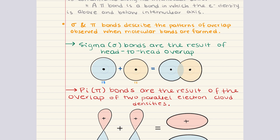There are two main patterns of overlap in the formation of molecular bonds. The first is sigma bonds. A sigma bond occurs when the electron density is concentrated along the internuclear axis — when orbitals overlap head to head. Sigma bonds allow for free rotation about their axis because the electron density is a single linear accumulation between the atomic nuclei. Single bonds are sigma bonds resulting from the overlap of s orbitals, p orbitals, or an sp orbital.